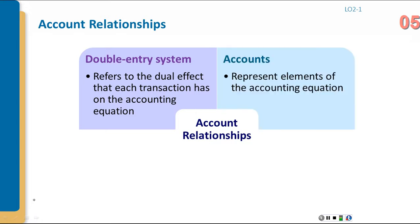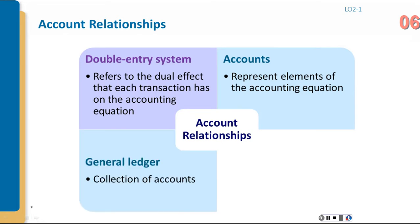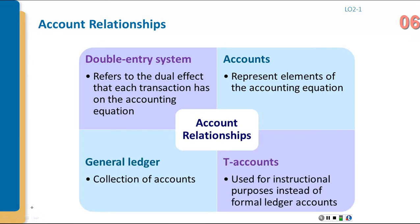Account relationships: the double-entry system refers to the dual effect each transaction has on the accounting equation. An account represents an element of the accounting equation, and we debit and credit different accounts. All accounts are listed in the general ledger, which is a collection of all accounts. We also use the T-account, primarily for instructional purposes, to demonstrate how all items flow together. It is also used in practice when analyzing which accounts are impacted by a transaction.